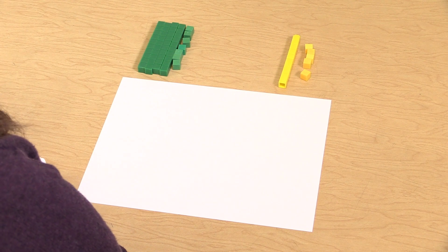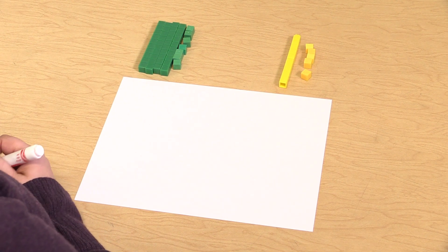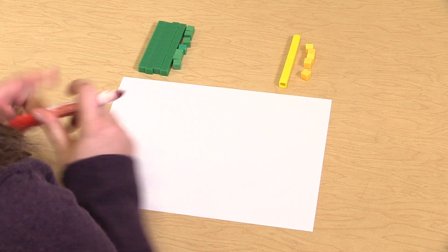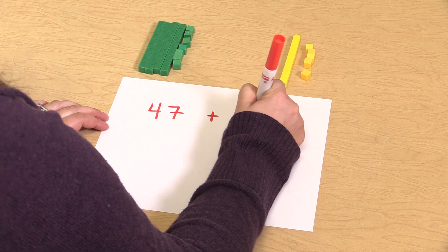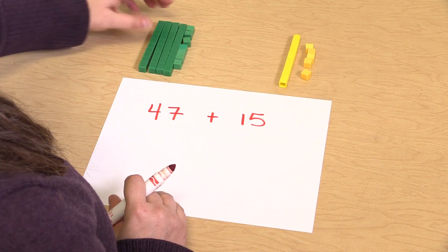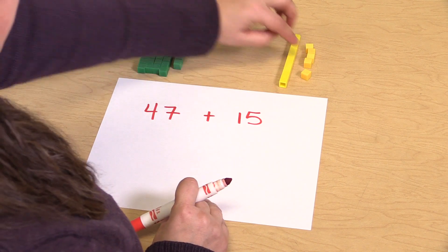In second grade, students can continue to use the make ten to add strategy by using base ten blocks. So if a student wanted to add forty-seven plus fifteen, first they would create the forty-seven with the base ten blocks, and the fifteen.